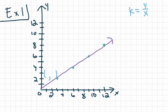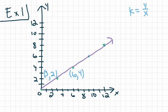For the first point, we count three units to the right and two units up, giving us the coordinate (3, 2). For the second point, we go right six and up four: (6, 4). For the third point, we go right nine and up six: (9, 6). And for the last point, we go right twelve and up eight: (12, 8).